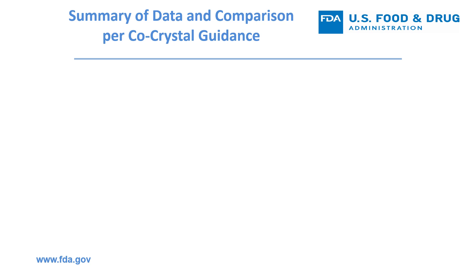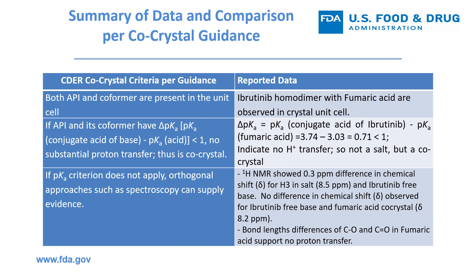This slide summarizes line by line the FDA co-crystal criteria and how the reported data meet this criteria. FDA criteria for co-crystal has three parts. Number one: both API and co-former are present in the unit cell. The reported data showed an Ibrutinib homodimer with one fumaric acid observed in single crystal X-ray diffraction. Number two: if API and its co-former meet the criteria — delta pKa equals pKa of conjugate acid of base minus pKa of acid, and that value is less than one — then no substantial proton is transferred, and a co-crystal is formed.